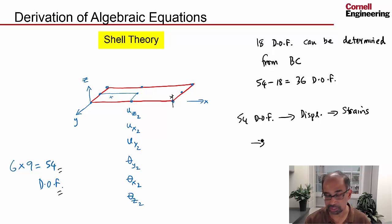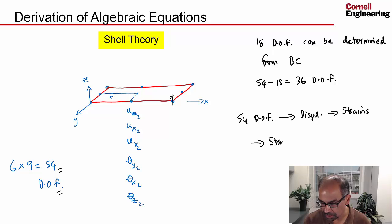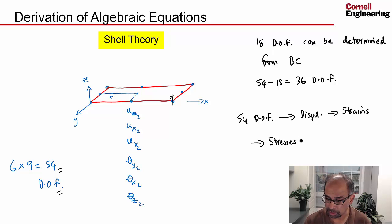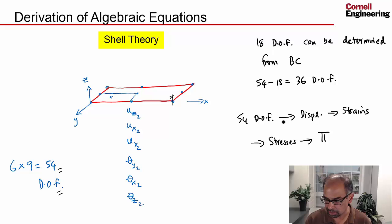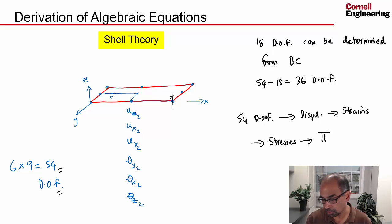Once I know the strains, I can use the material properties to find the stresses. And once I know the strains and the stresses — as discussed in the cantilever beam module — I can find the potential energy. This means we have a very complicated function that relates these degrees of freedom to the potential energy, and we want to find the 36 unknowns such that this is minimized.